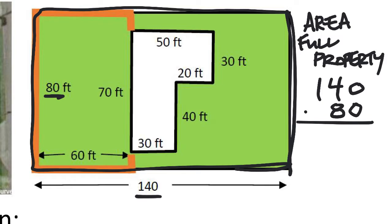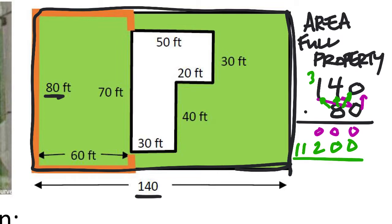This will tell me the size of this property in square feet. Zero times anything is zero, so we get three zeros there. The 8 in the tens place: 8 times 0 is 0, 8 times 4 is 32, carry the 3, 8 times 1 is 8, plus 3 makes 11. So that's 11,200 square feet.